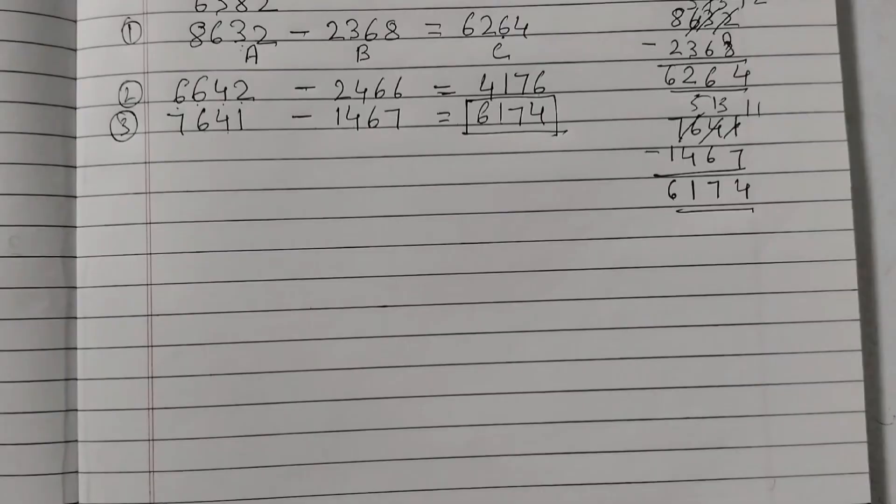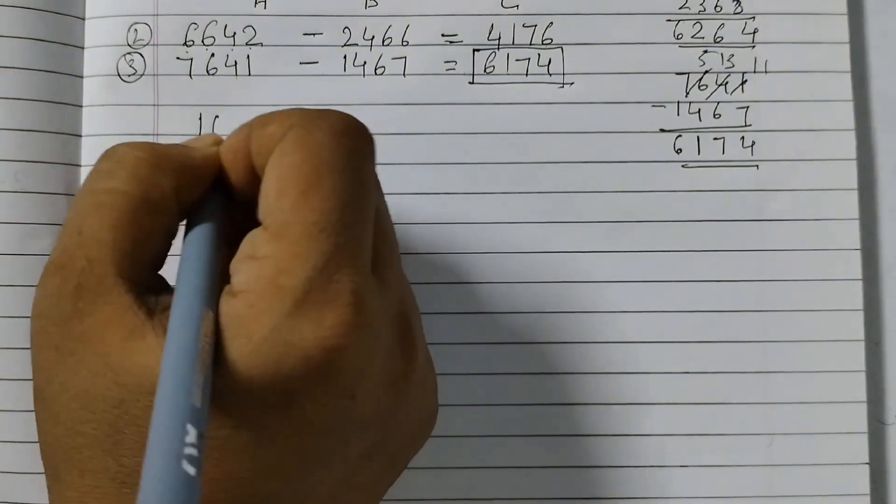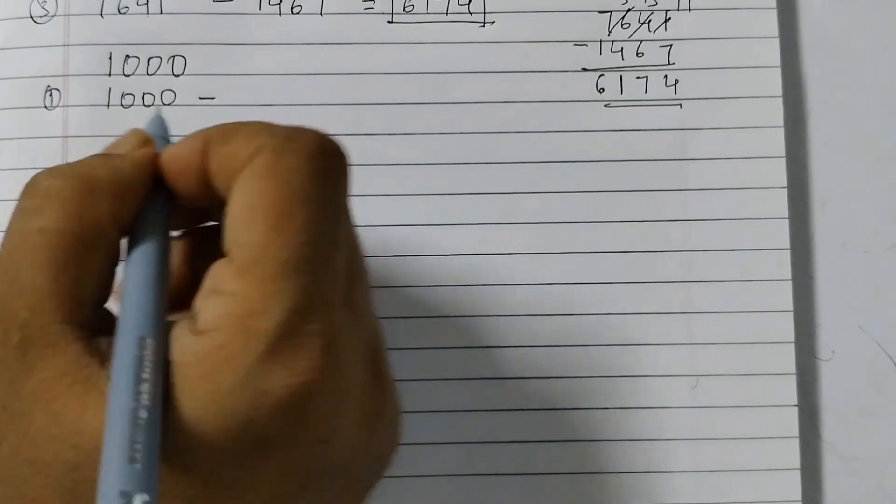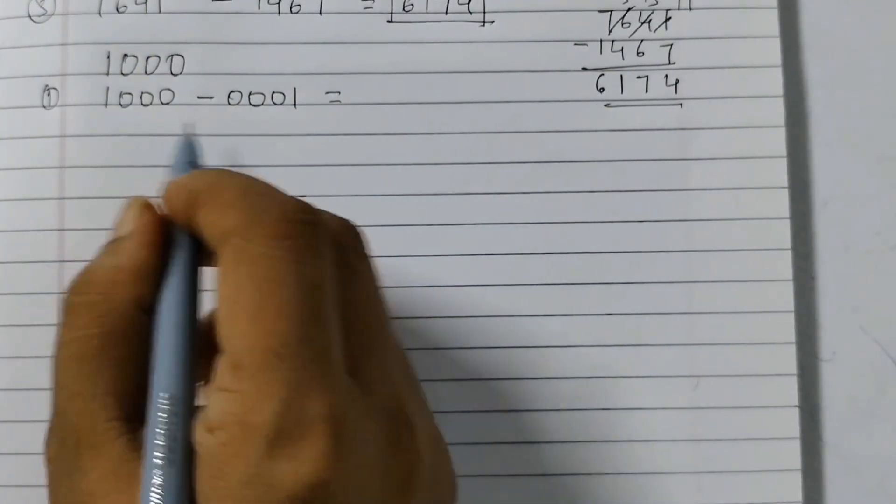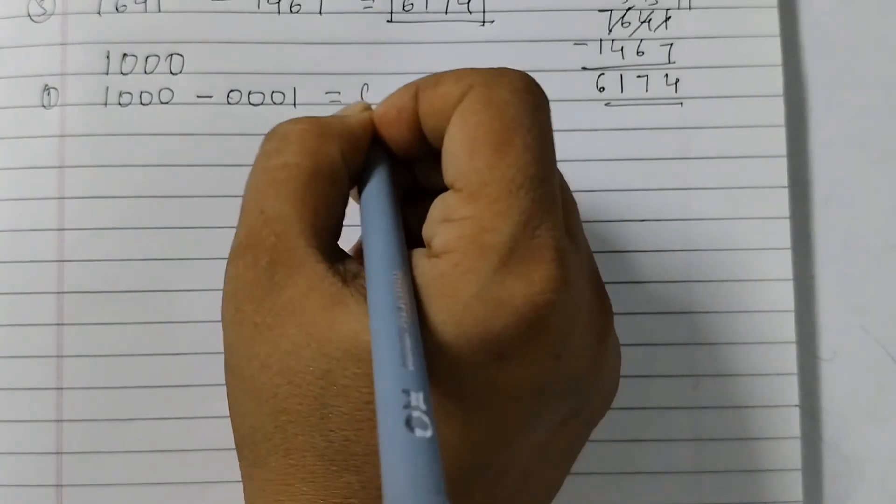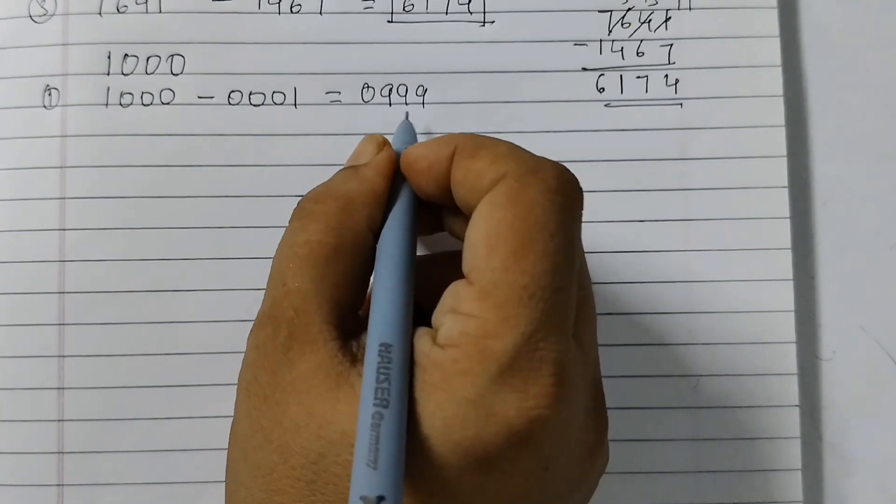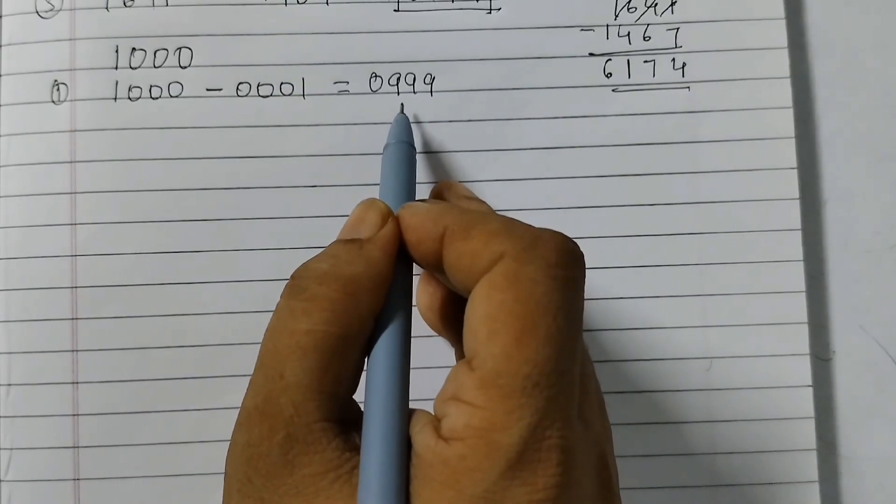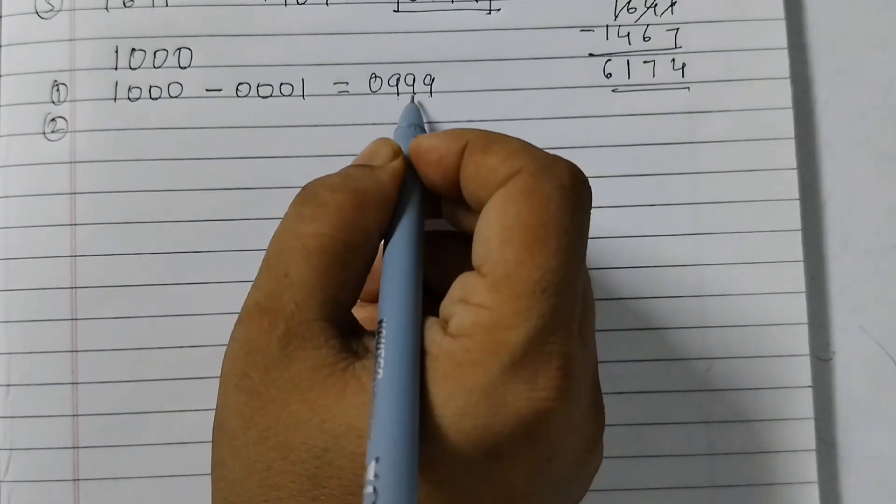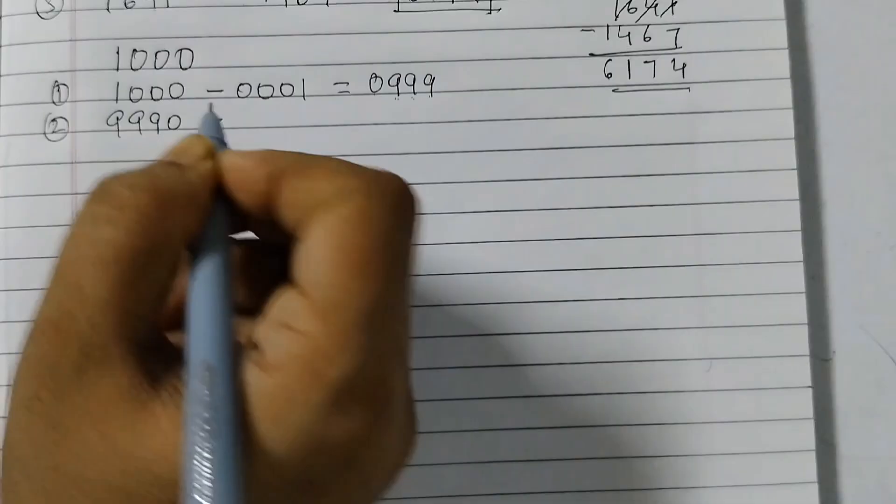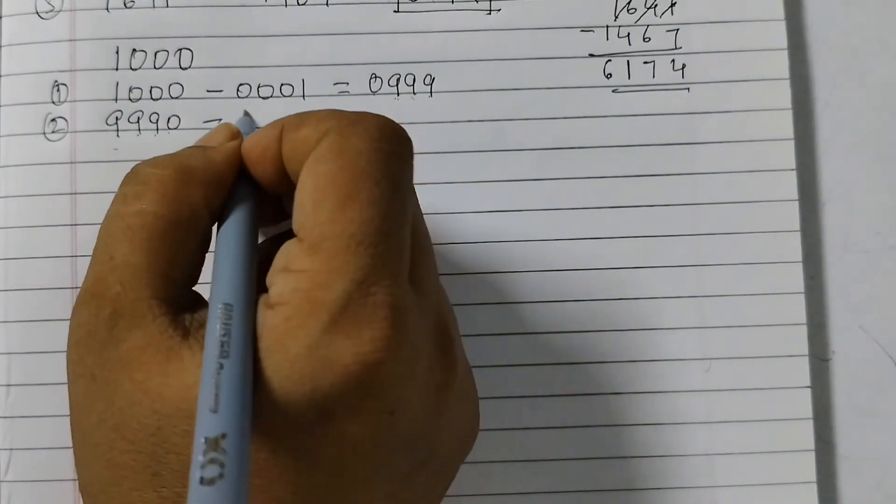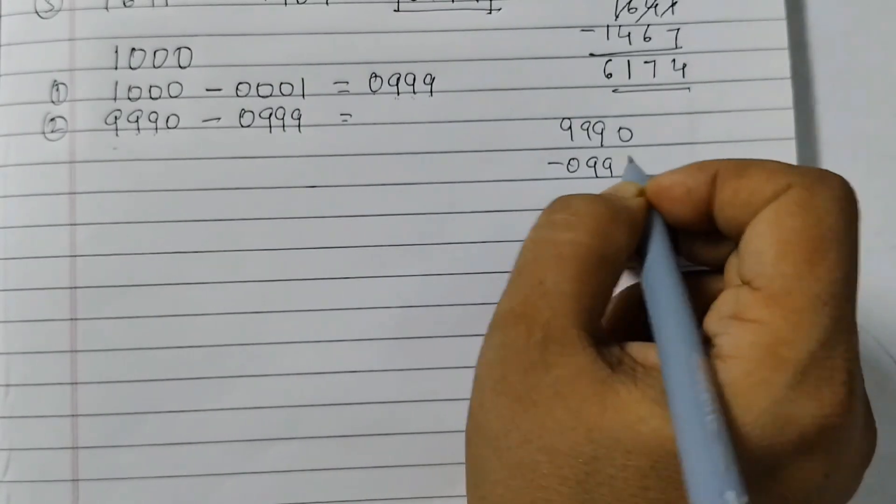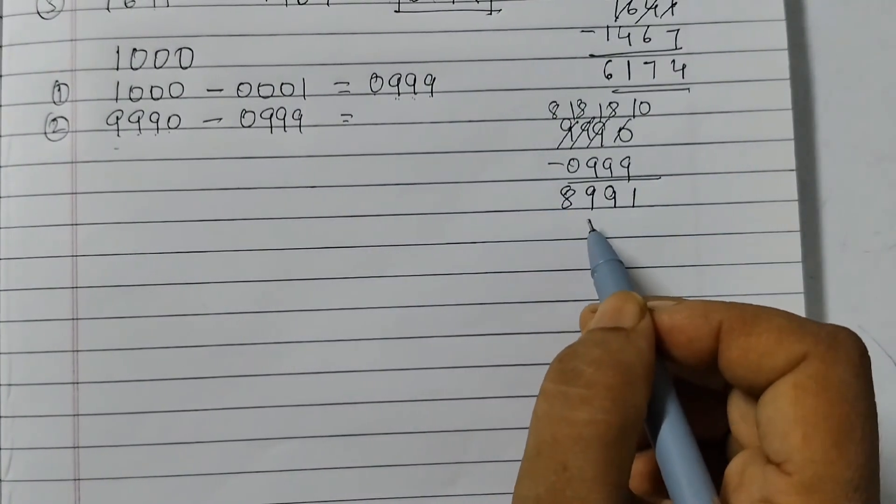You take any 4 digit number except these numbers, you would reach this magic number within 7 steps. Let us take another example. Let us say we take the number 1000. Step 1: The largest number we can form is 1000 and the smallest number is 0001. That equals to 1000 minus 1 is 999. However, we will write it as 4 digit number, so 0999. With this number we will make the largest number and the smallest number and subtract. So 2nd step, the largest number is 9990 minus 0999. When we do the subtraction we get 8991.